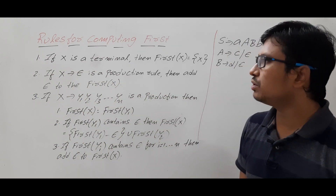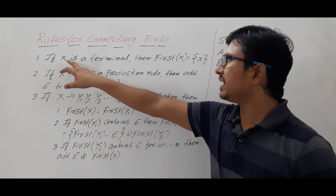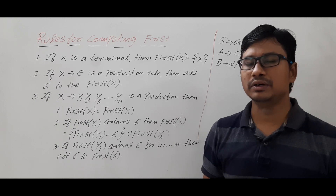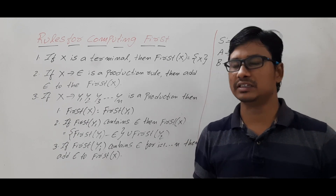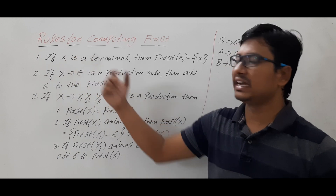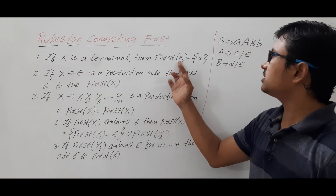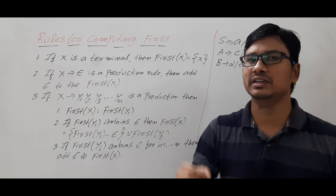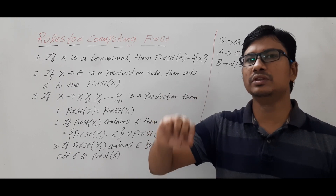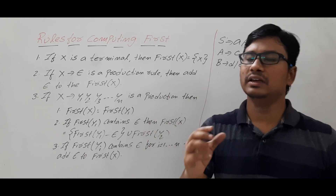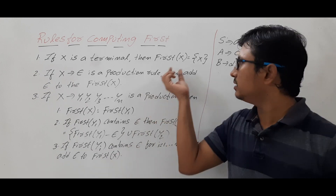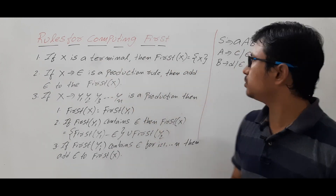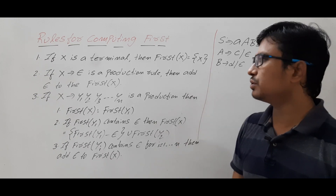Rule 1: If X is a terminal — any grammar consists of non-terminals and terminals — then FIRST(X) = {X}. If you want to compute FIRST of any terminal, the answer is the terminal itself. Please note down this point.